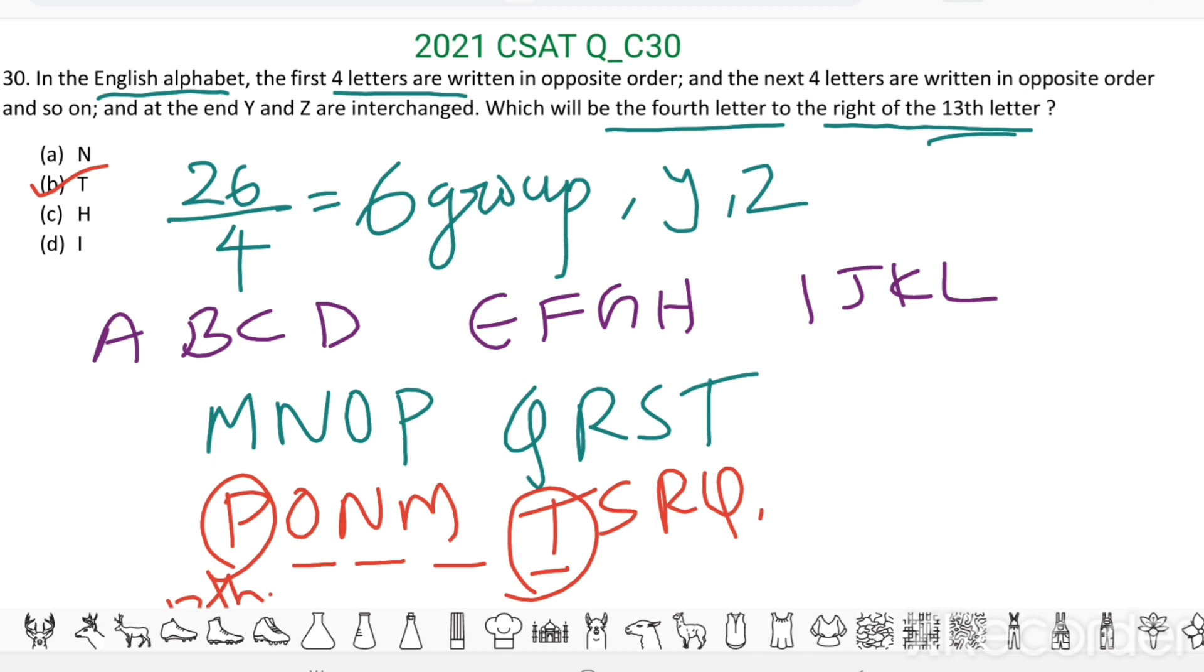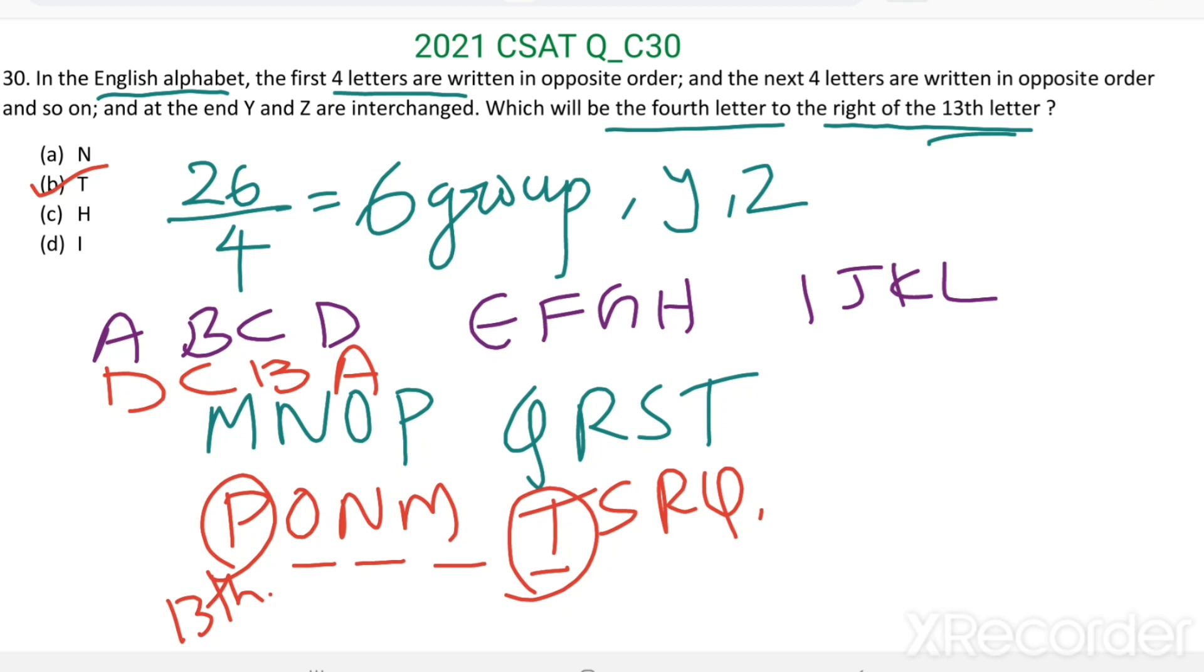Write the letters in the group in opposite direction. D-C-B-A, H-G-F-E, L-K-J-I.